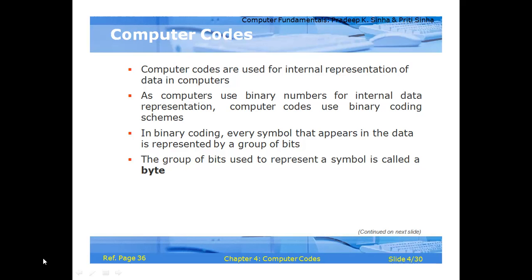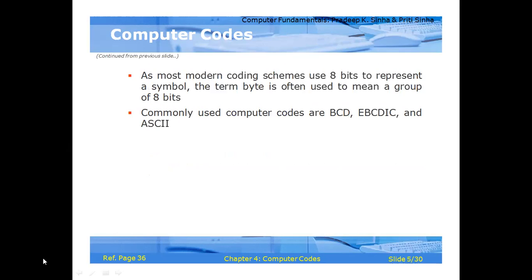In binary coding, every symbol that appears in the data is represented by a group of bits. The group of bits used to represent a symbol is called a byte. One byte equals eight bits. Most modern coding schemes use eight bits to represent a symbol. The term 'byte' is often used to mean a group of eight bits.